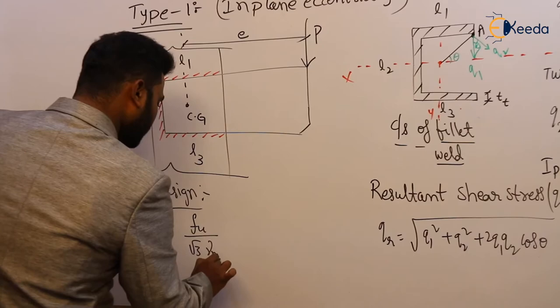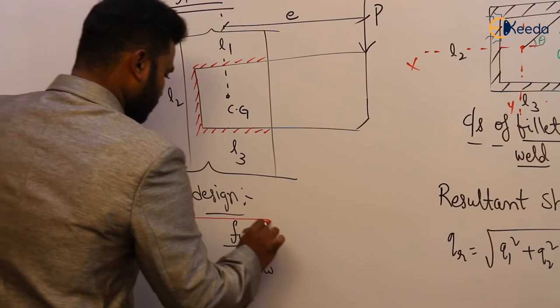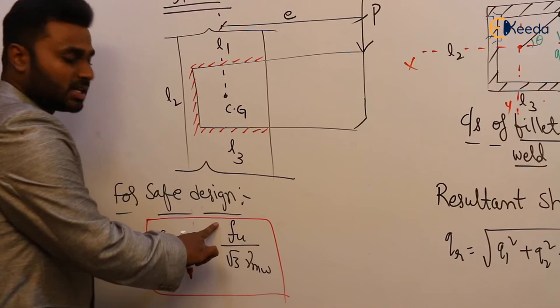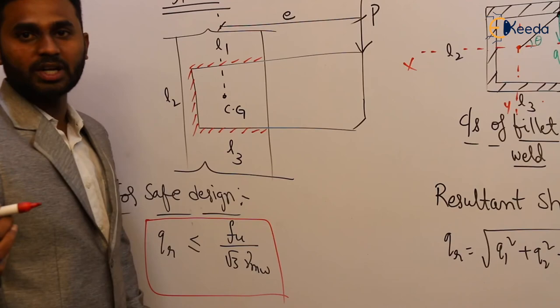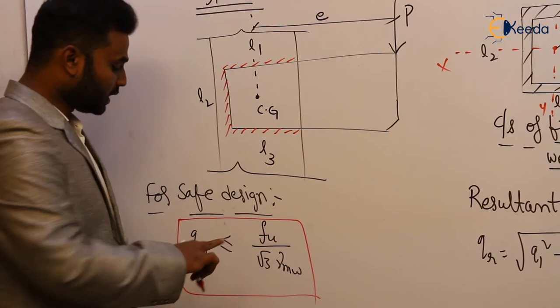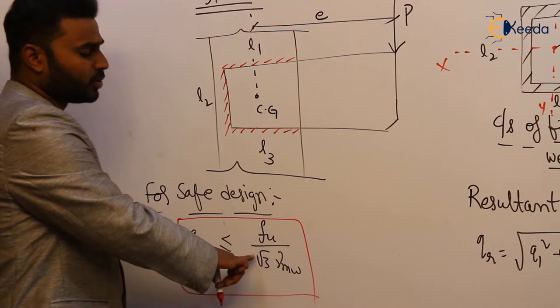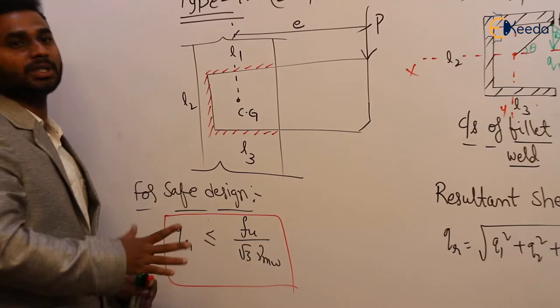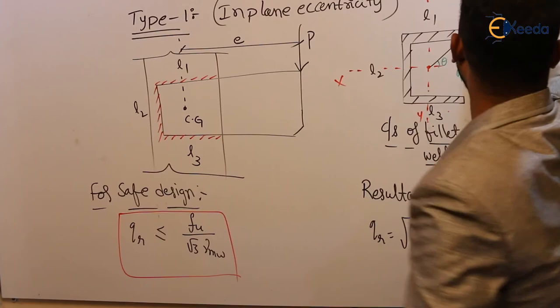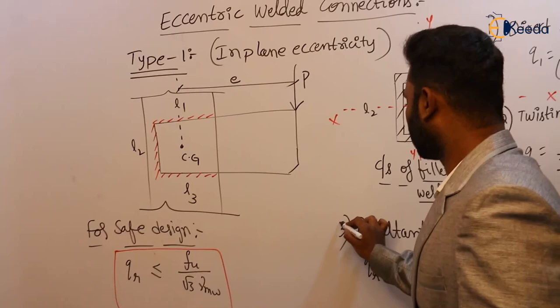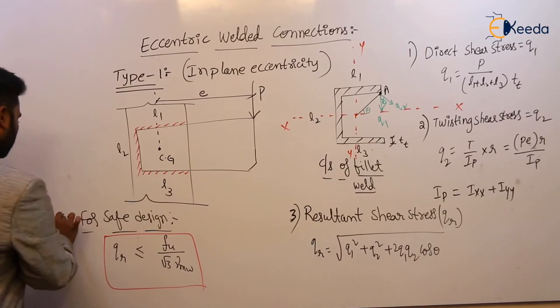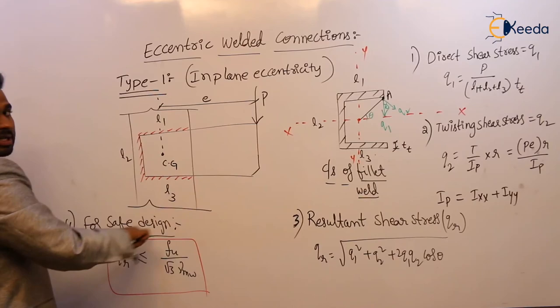The permissible shear stress is fu / (√3 × γ_mw). fu is the ultimate tensile strength, and γ_mw depends on whether it is a workshop weld or a field weld: 1.25 for workshop weld and 1.5 for field weld. So the calculated resultant shear stress qr ≤ fu / (√3 × γ_mw). This is the complete procedure for in-plane eccentric welded connections — step 1, step 2, step 3, and step 4.